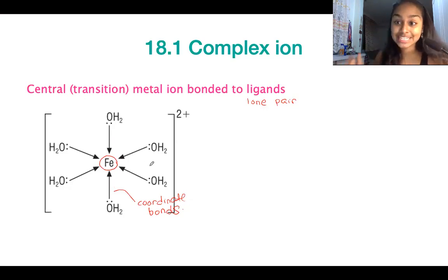Let's talk about what's going to be the Lewis acid and the Lewis base now. So the Lewis acid, in this example, is going to be your lone pair acceptor, and therefore it's going to be iron, or your central metal ion. And your Lewis base is going to be your electron pair donor. And therefore, this is going to be the ligands, in this case, H2O.